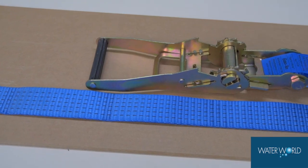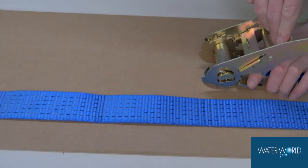In order to close the ratchet for storage, pull and hold the release tab and fold closed.